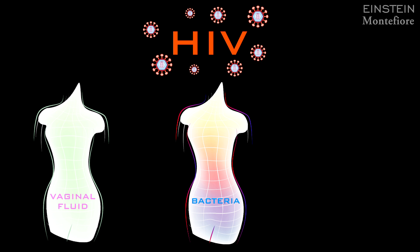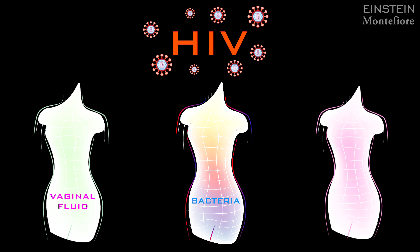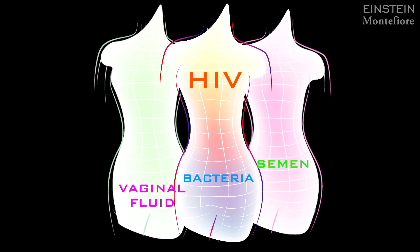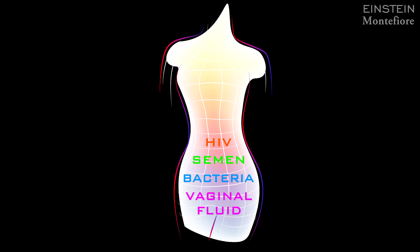The genital tract has vaginal fluid, which is rich in proteins and other products from cells that are also there to help protect us. And if she has sex, which is how she gets exposed oftentimes to these viruses, there's semen in that genital tract. All of those things might change not only the way the drug works, but the way the virus can infect cells.